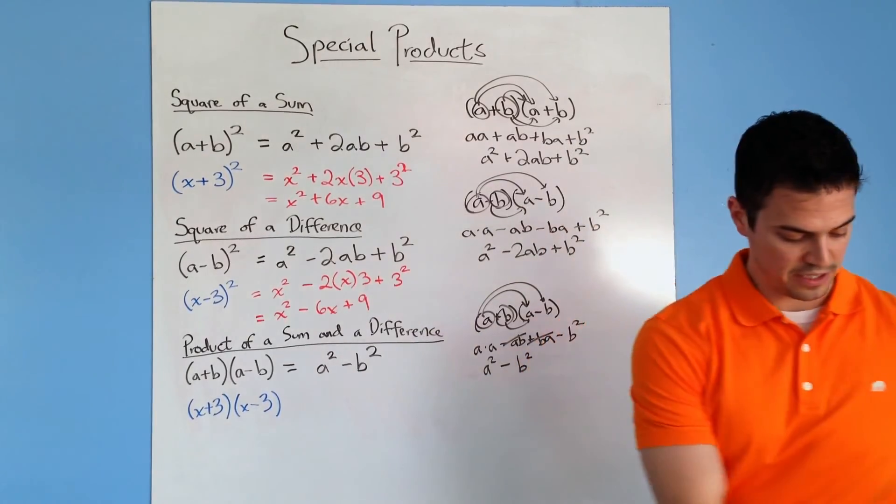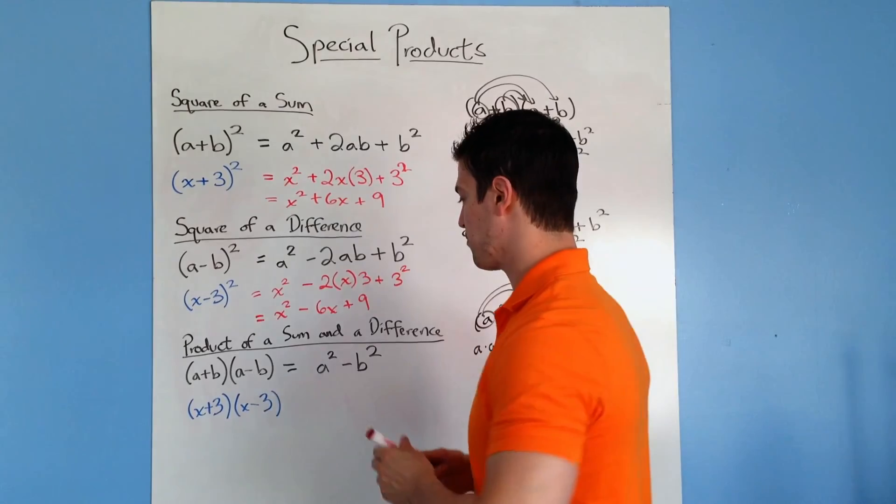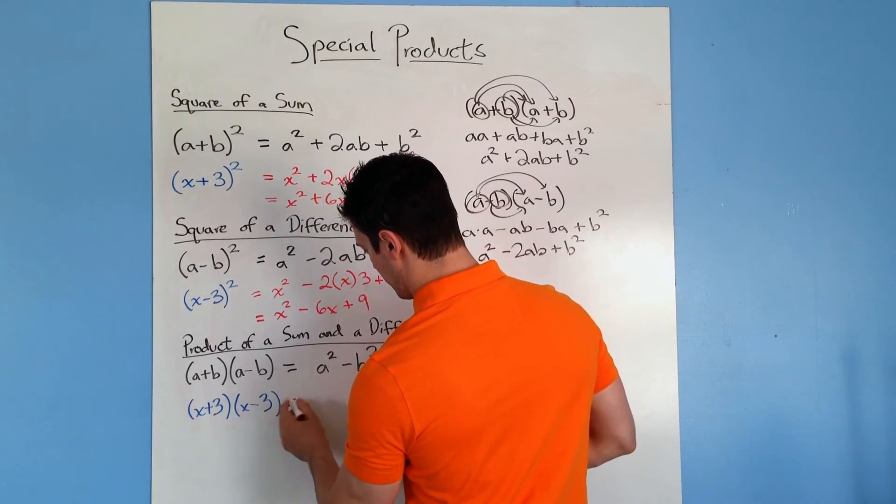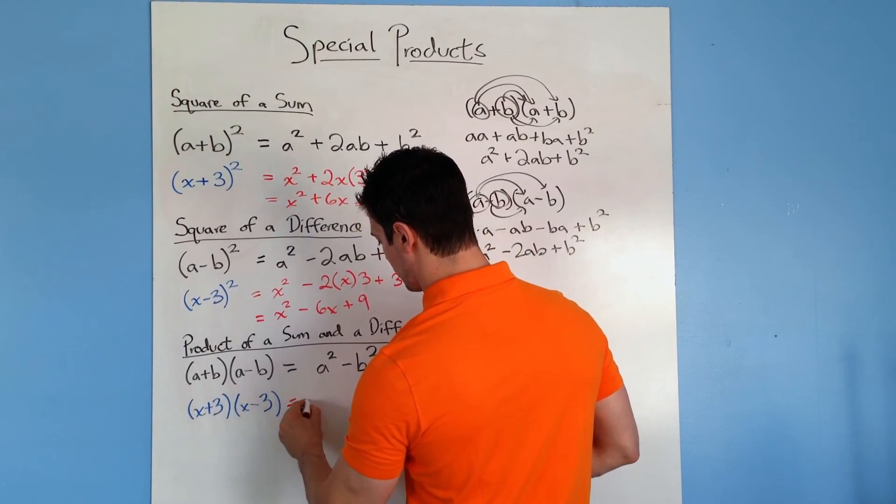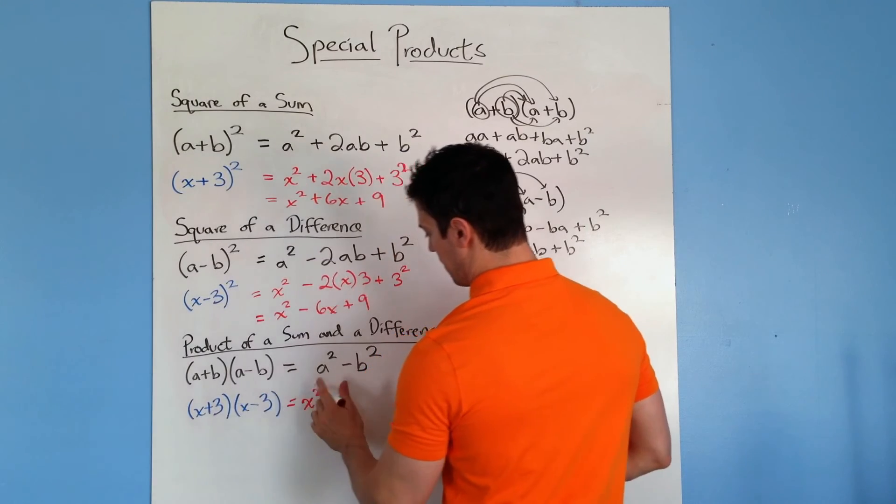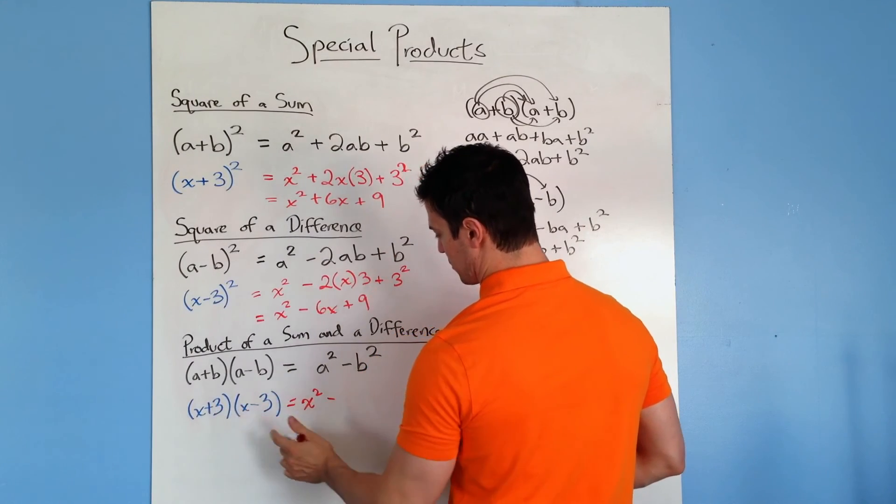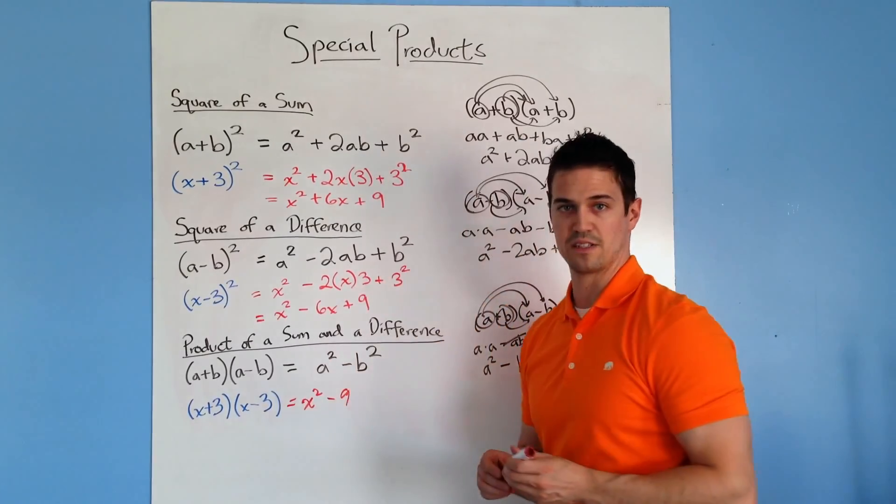So I'm going to show you this using an example right here of x plus 3 times x minus 3. So we end up with the a term squared, which would be x squared minus the b term squared, which would be 9. And you end up with x squared minus 9.